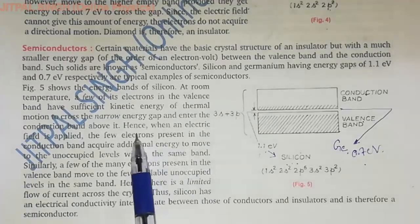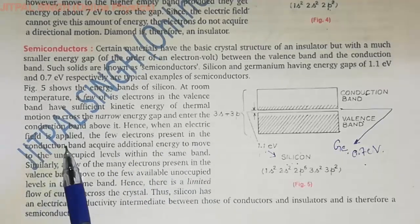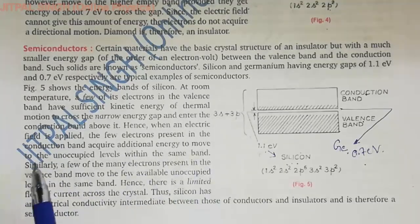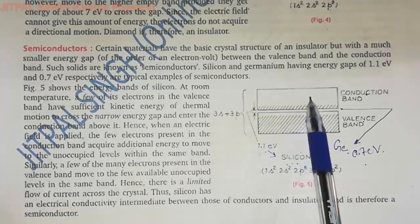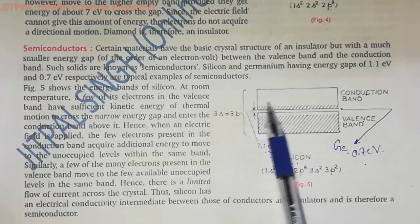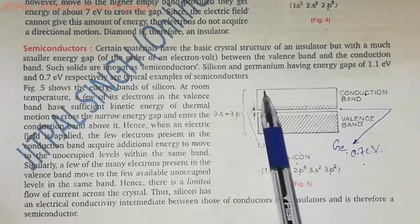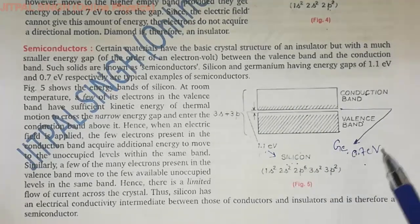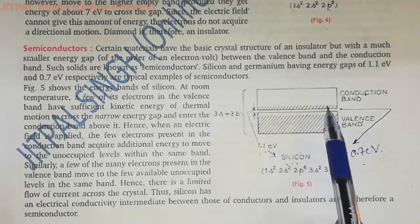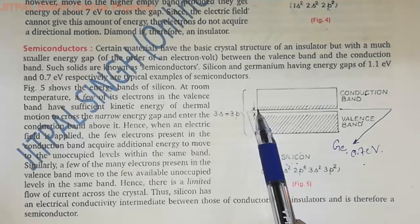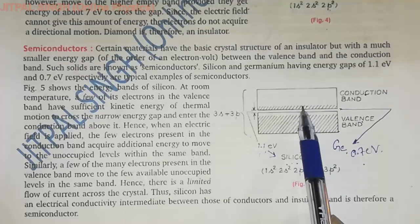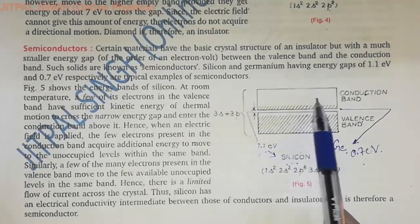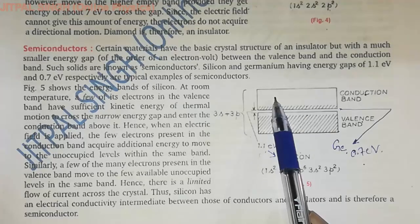Continuation of the previous video: when an electric field is applied, the few electrons present in the conduction band acquire additional energy to move to the unoccupied levels within the same band. The unoccupied levels are present in the conduction band, and when you apply an electric field, the electrons — as shown by the shaded region — can move into those unoccupied levels. When the unoccupied levels are available, current will follow the electrons' motion.